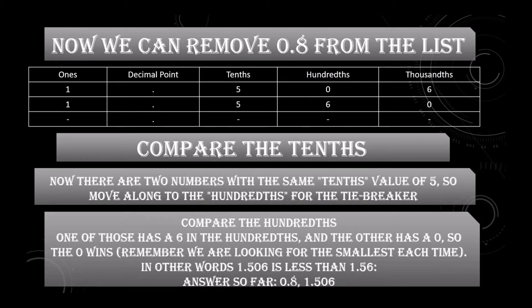Compare the hundredths: one number has a six in the hundredths and the other has zero, so zero wins. Remember, we are looking for the smallest each time — in other words, 1.506 is less than 1.56. So the answer so far is 0.8, then 1.506.